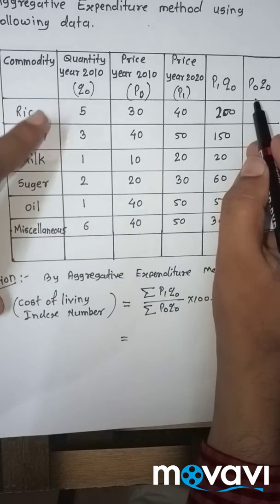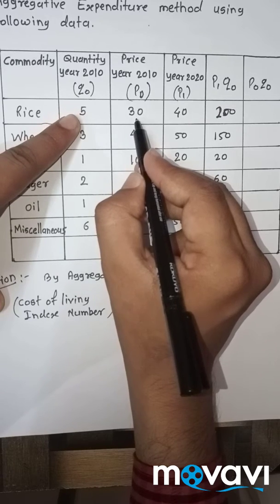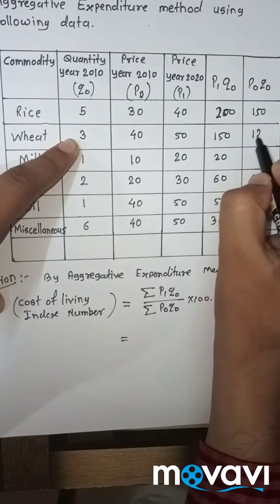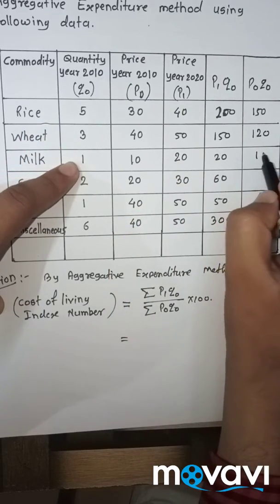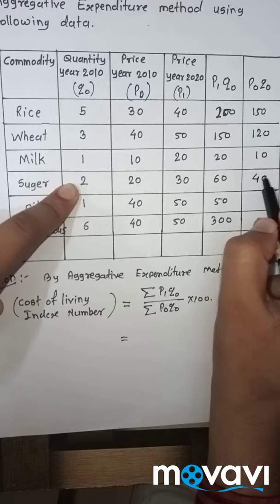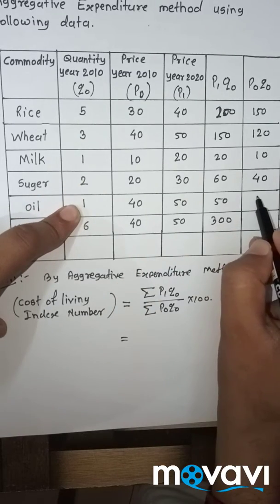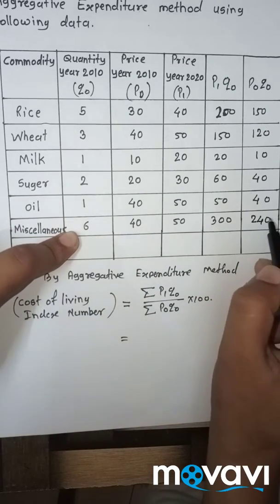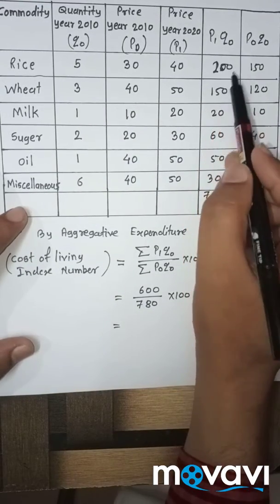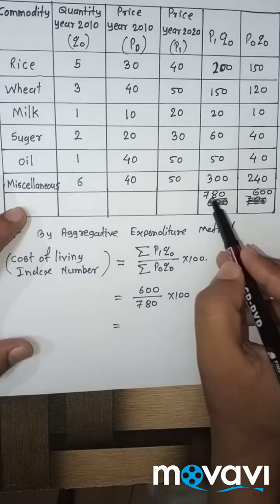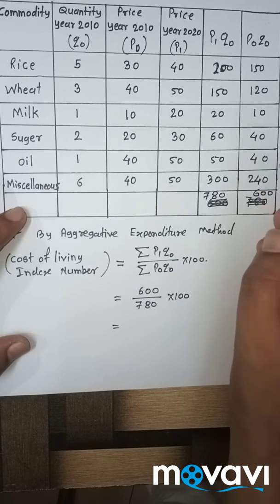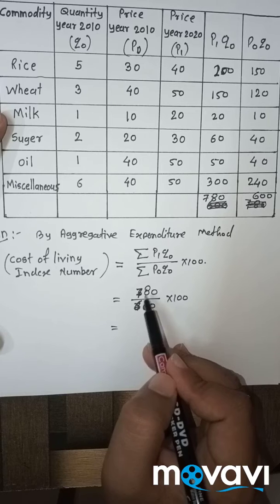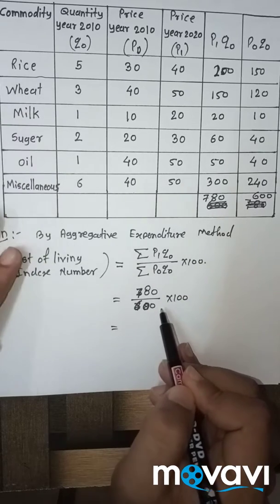Then for P0Q0: P0 is 30, Q0 is 5, so 30 into 5 is 150. 40 into 3 is 120. 10 into 1 is 10. 20 into 2 is 40. 40 into 1 is 40. And 40 into 6 is 240. If we add values of P1Q0 we get total 780, and if we add values of P0Q0 we get total 600. Summation P1Q0 is 780, summation P0Q0 is 600 into 100.